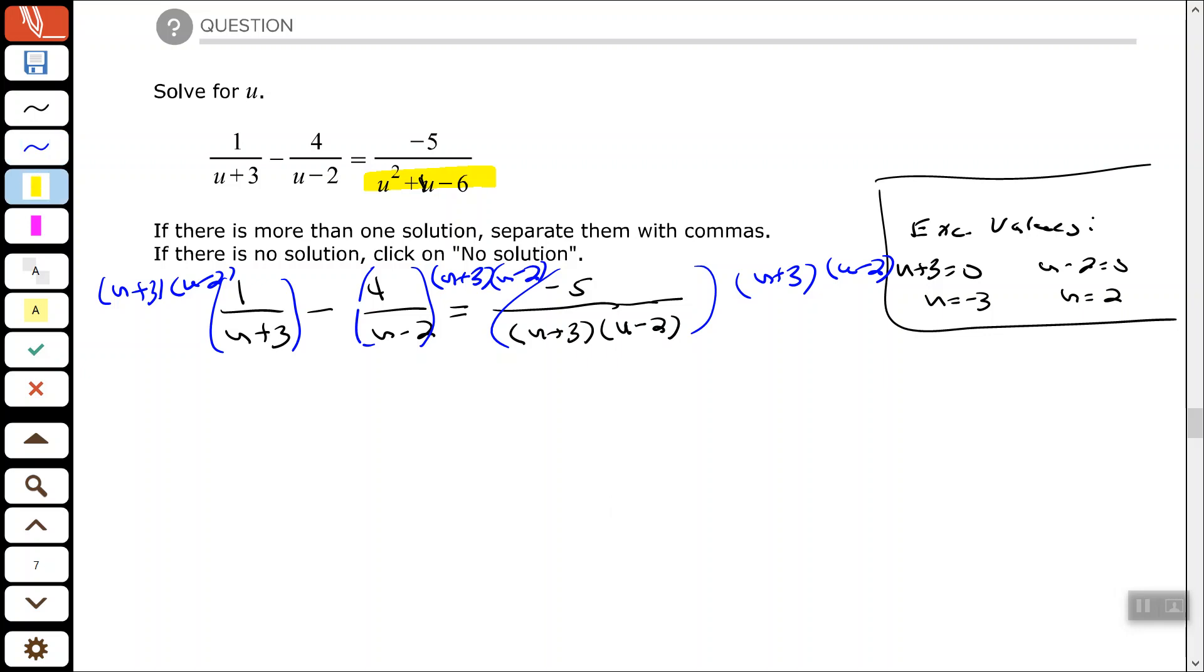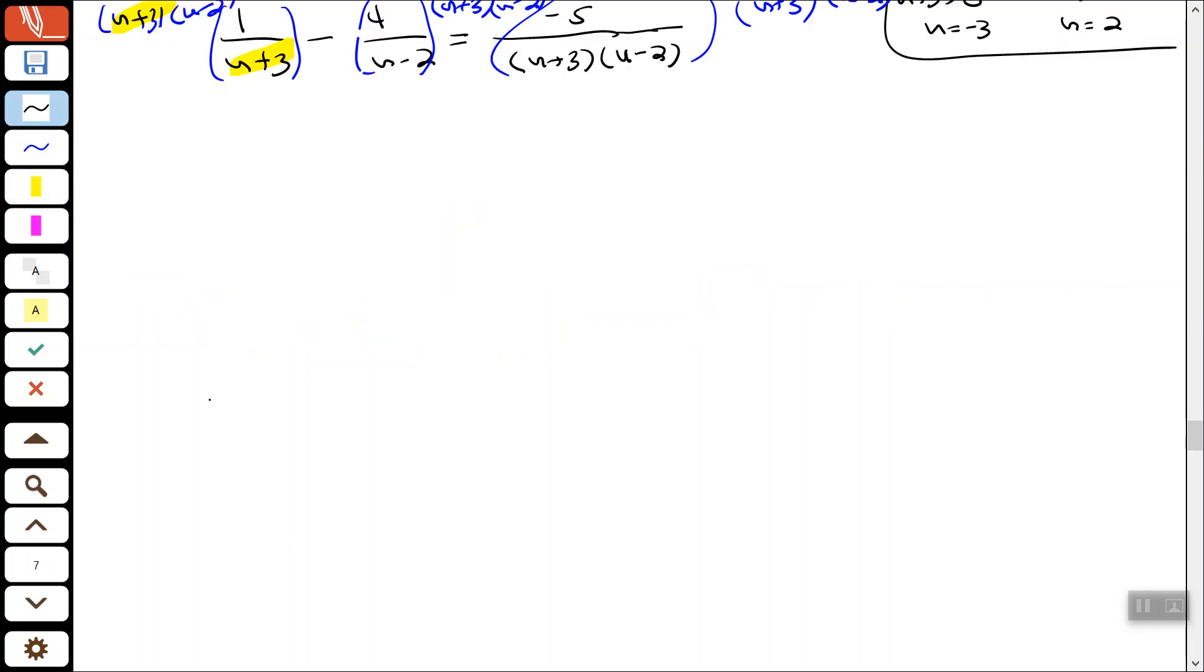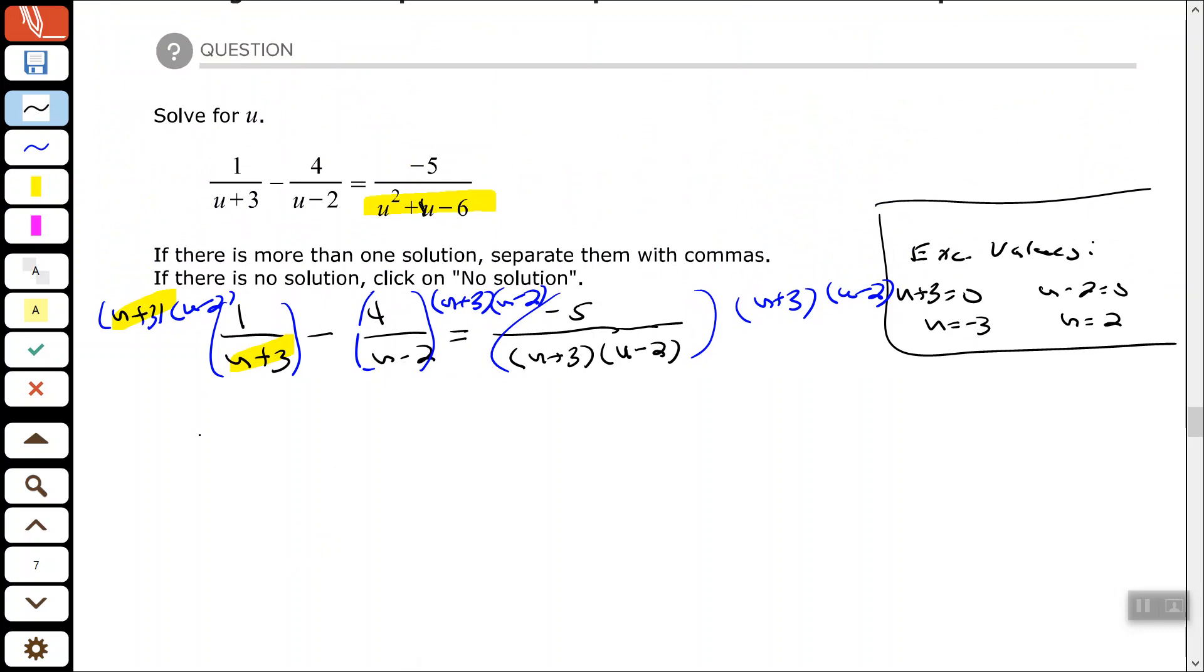And then simplify. So here I have a u plus 3 that will simplify, so I end up with 1 times u minus 2. And then the second fraction, the u minus 2s cancel each other out, so minus 4 times u plus 3. And then on the other side of the equation both of the factors cancel out, so I just have negative 5.